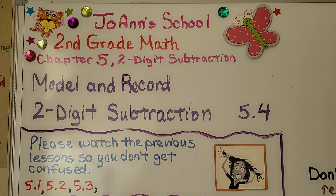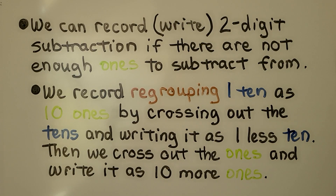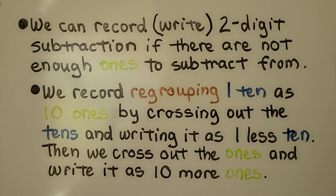Lesson 5.4: model and record two-digit subtraction. We can record — that means write — two-digit subtraction if there are not enough ones to subtract from. We record regrouping one ten as ten ones by crossing out the tens and writing it as one less ten. Then we cross out the ones and write it as ten more ones. So I'll show you.